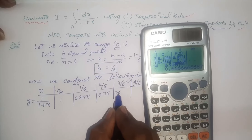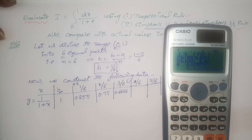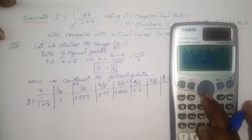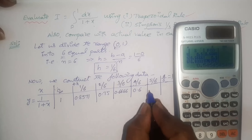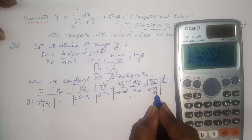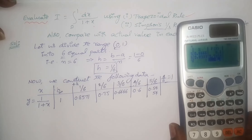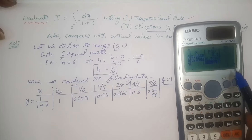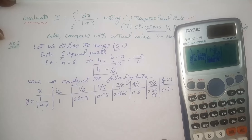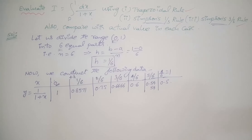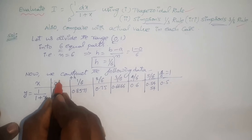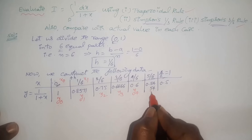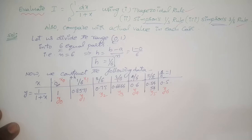Continuing the scroll, we get 0.66666 recurring, 0.6, and 0.5454. Now put the names for the y values: this is x0 so the respective value is y0, this is x1 so this is y1, and similarly y2, y3, y4, y5 and y6. Please put the names for the respective y values — don't forget it.